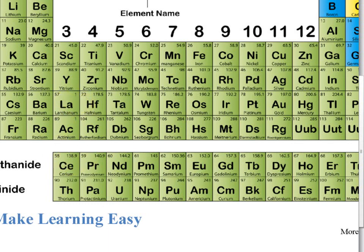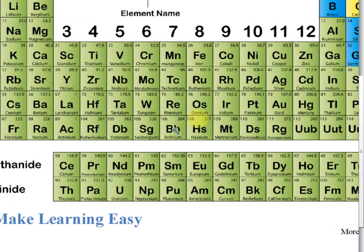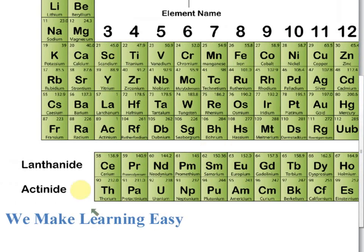Elements 58 to 71 are taken out and placed below the main table — this is called the lanthanide series. The same is done for period seven: you can see that proton number 89 suddenly becomes 104, meaning those elements between 89 and 104 have also been taken out.